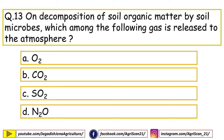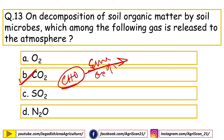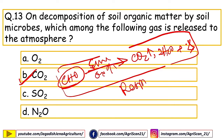Next question: on decomposition of soil organic matter by soil microbes, which gas is released to the atmosphere? Options are oxygen, carbon dioxide, sulfur dioxide, nitrous oxide. The right answer is carbon dioxide. When any biomolecule undergoes enzymatic oxidation, carbon dioxide and water are released along with energy — this process is called respiration, through which microbes generate energy for metabolic activity and growth.